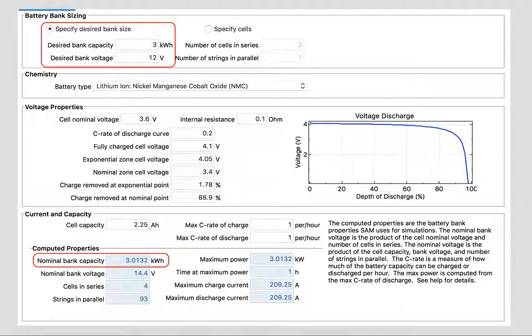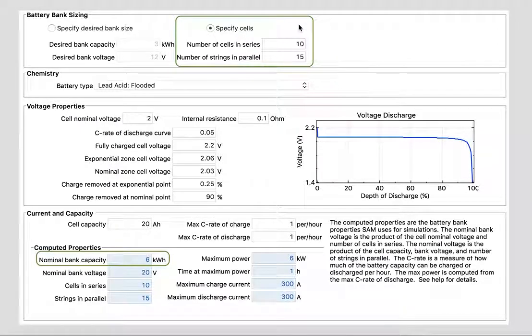Now let's look at where I think people can get a little bit tripped up, which is if you were to specify the cells—this is what's boxed in green right now. Specify the cells with 10 cells in series, 15 in parallel, and the nominal bank capacity suddenly is 6 kilowatt hours for a flooded lead-acid battery. The nominal bank voltage is 20 volts.